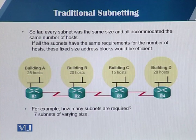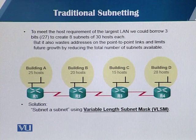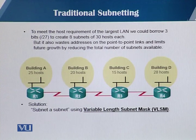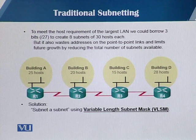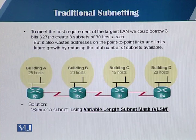Every subnet is going to have a variable number of hosts. To meet the host requirement of the largest LAN, which is building D, we could borrow three bits to create eight subnets of 30 hosts each. But this wastes addresses on the point-to-point links between the routers and also limits future growth by reducing the total number of subnets available. So how do we overcome this situation?